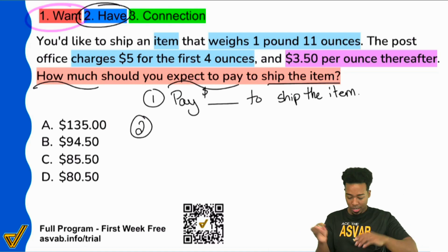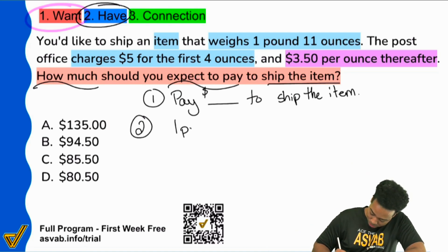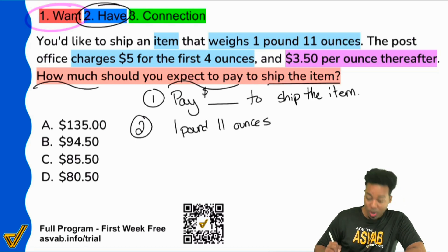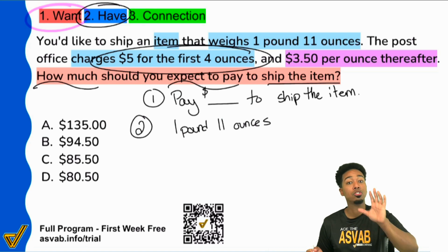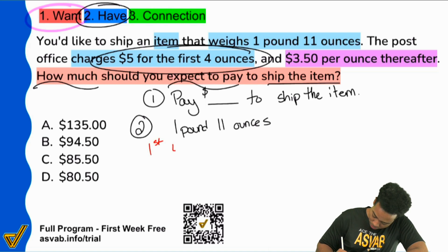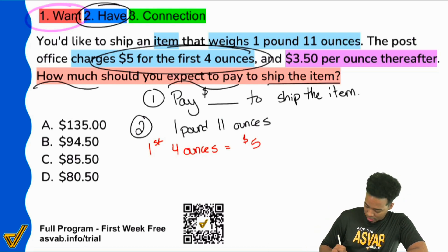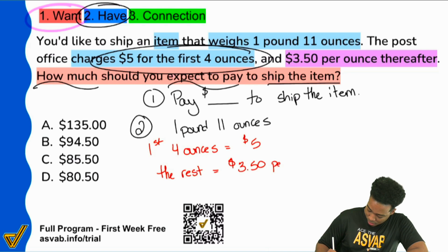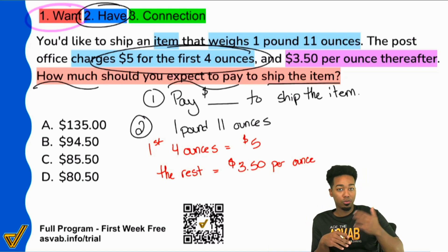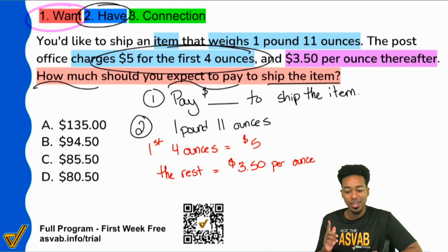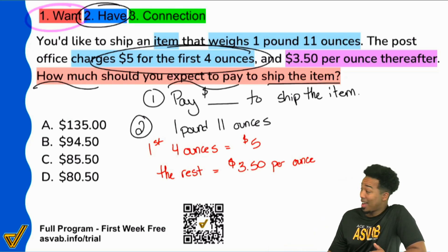So what does that all really mean? We have the package that is one pound, 11 ounces. And the way that we're structuring this payment is like this: the first four ounces is just five bucks. So first four ounces, that's going to be $5. And then for the rest, that's going to be $3.50 per ounce. If you're familiar with the word per, that means that whatever is after the word per, you multiply by that to get the total. So $3.50 per ounce, you multiply by the number of ounces to get that total.